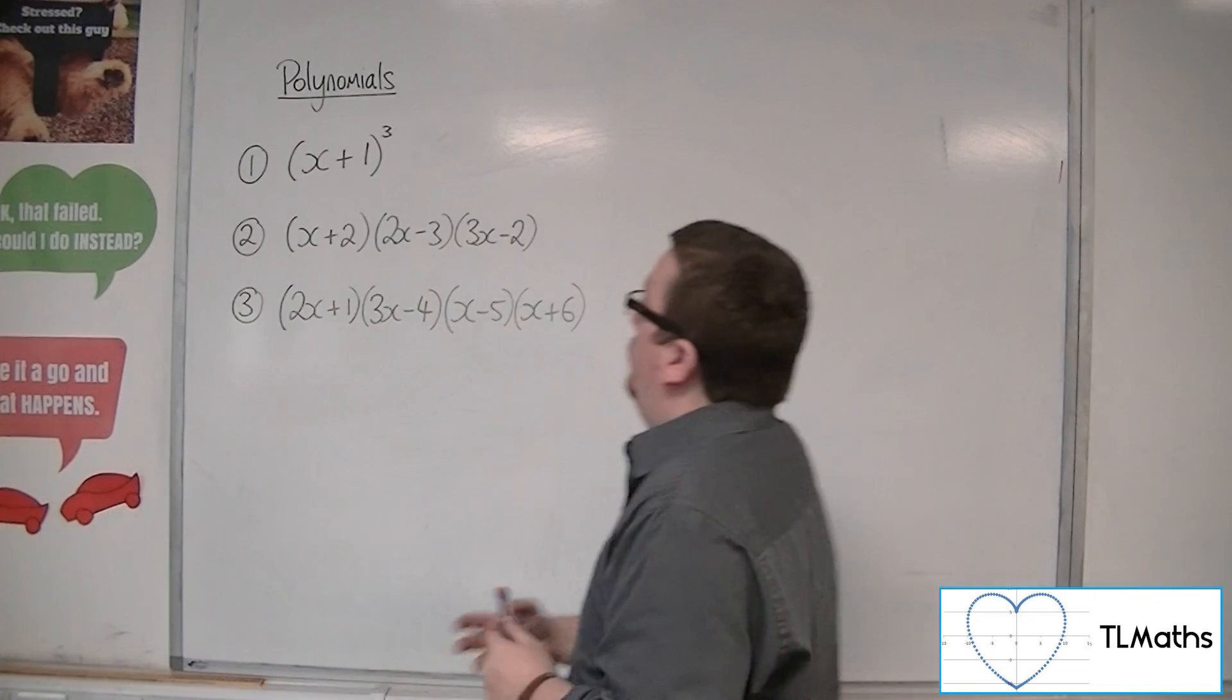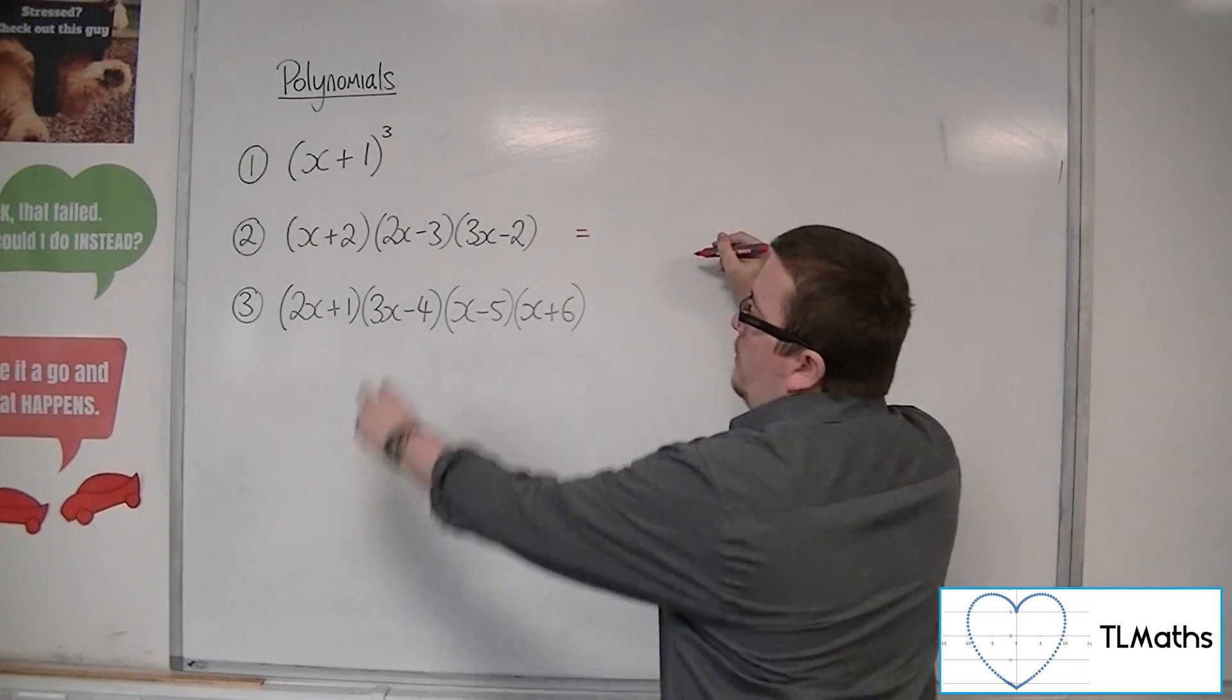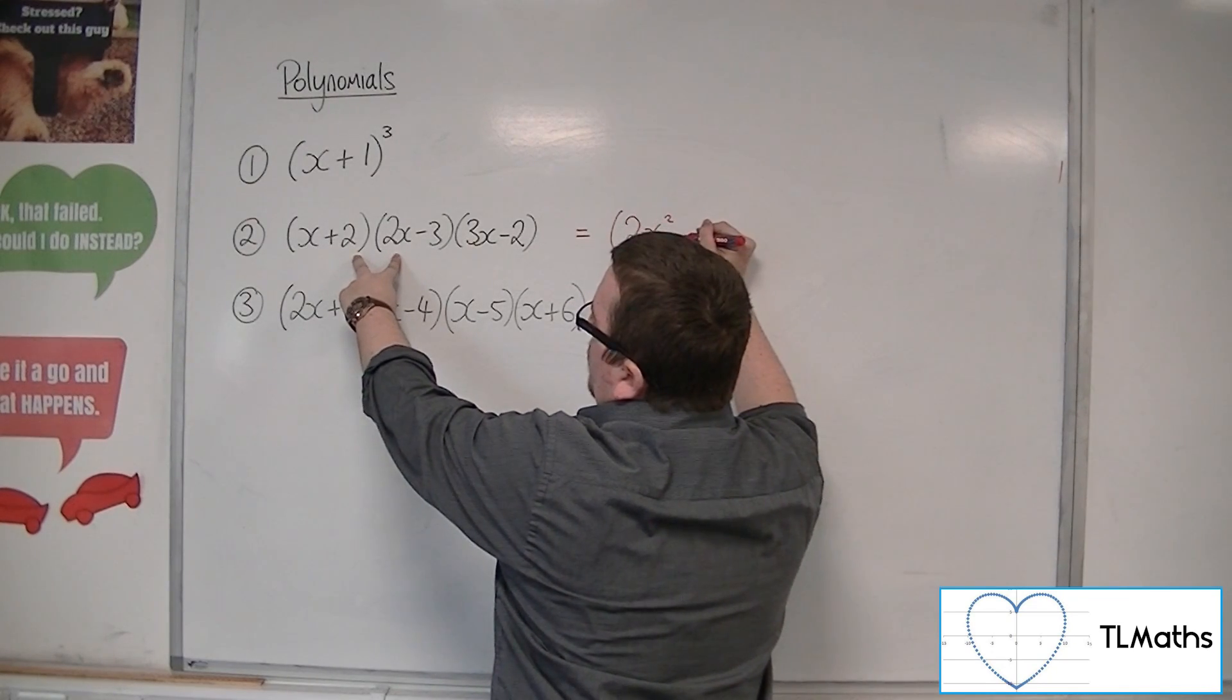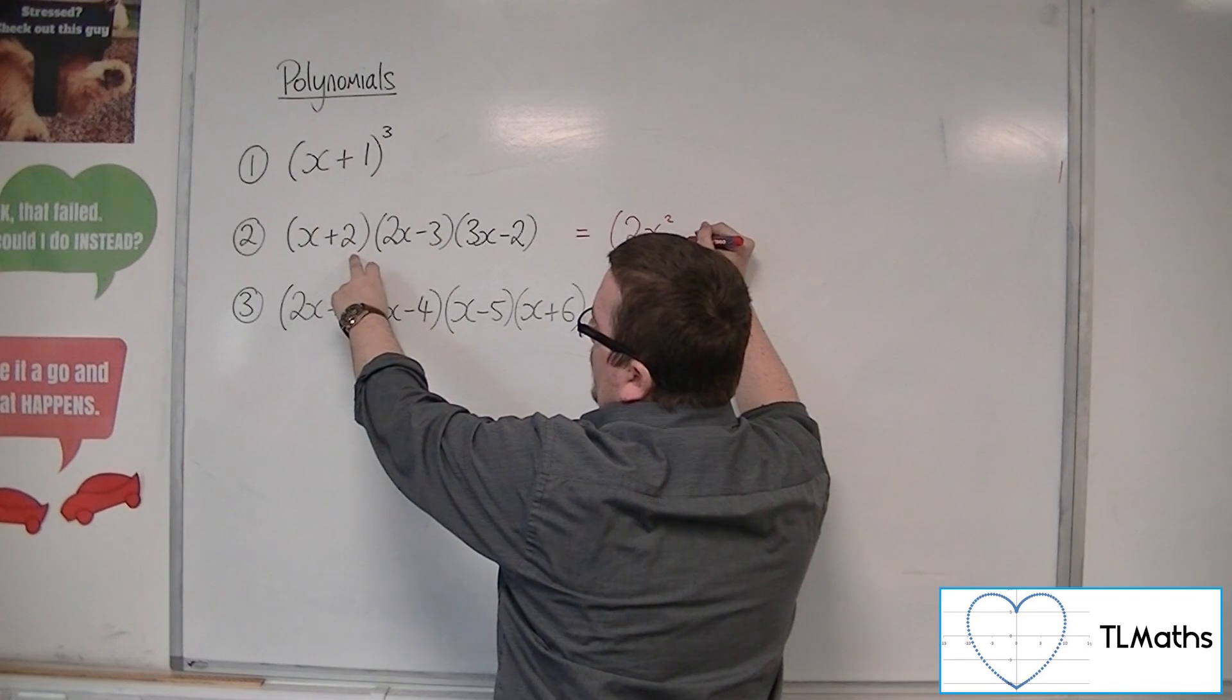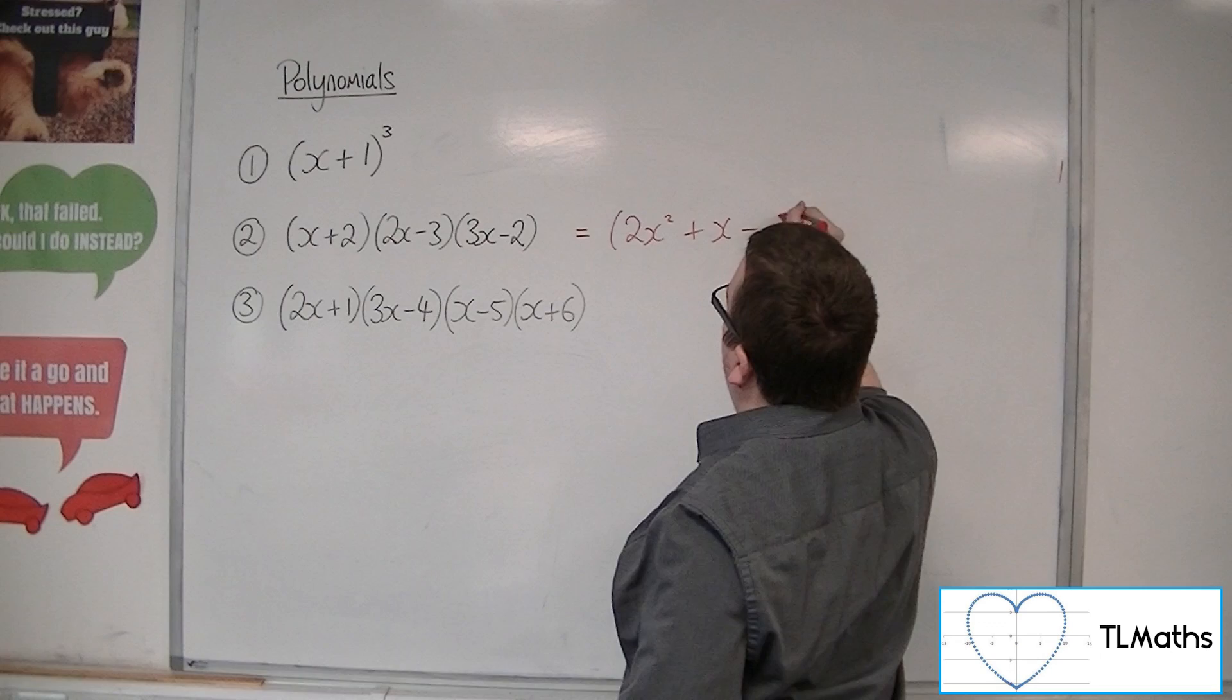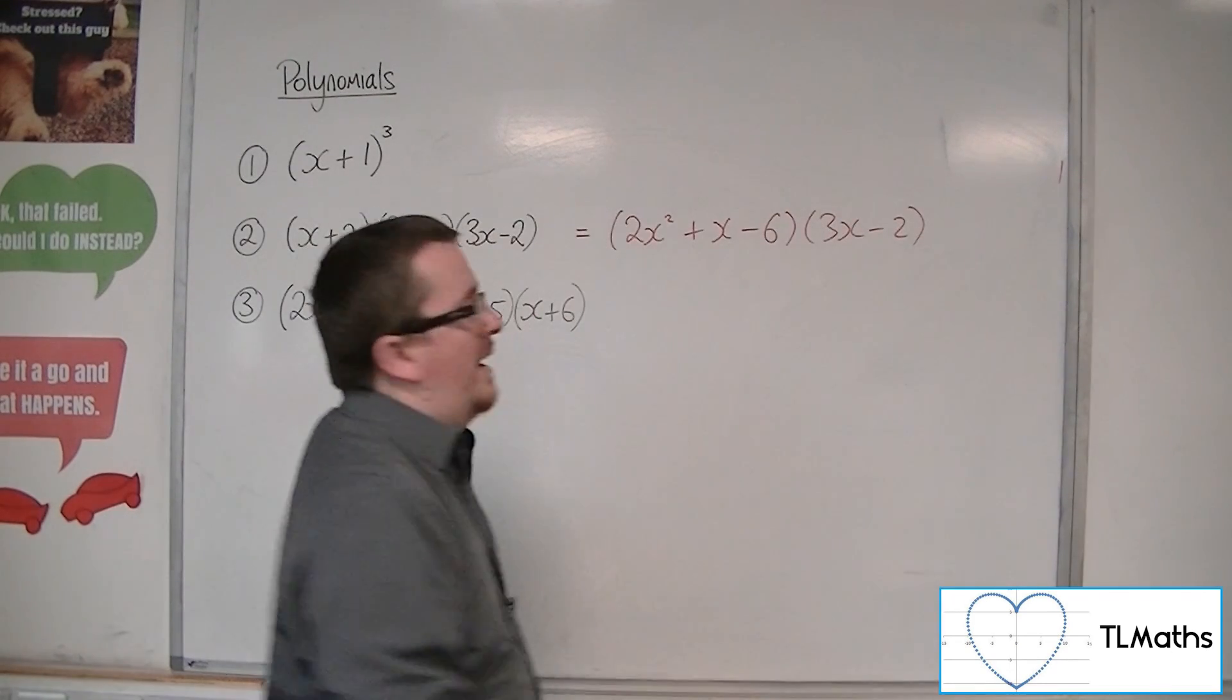Number 2, we've got (x+2) times (2x-3) times (3x-2). So I'm going to choose to expand the first two brackets. So 2x², then we're going to get 2x times 2, so 4x, and a -3x, so +x, and then -6. So I've now got two brackets to expand.